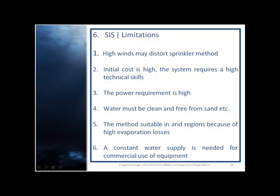Limitations of sprinkler irrigation system: high winds may distort the sprinkler method, initial cost is high, the system requires high technical skills, power requirement is high, water must be clean and free from sand. The method is not suitable in arid regions because of high evaporation losses. A constant water supply is needed for commercial use of equipment.